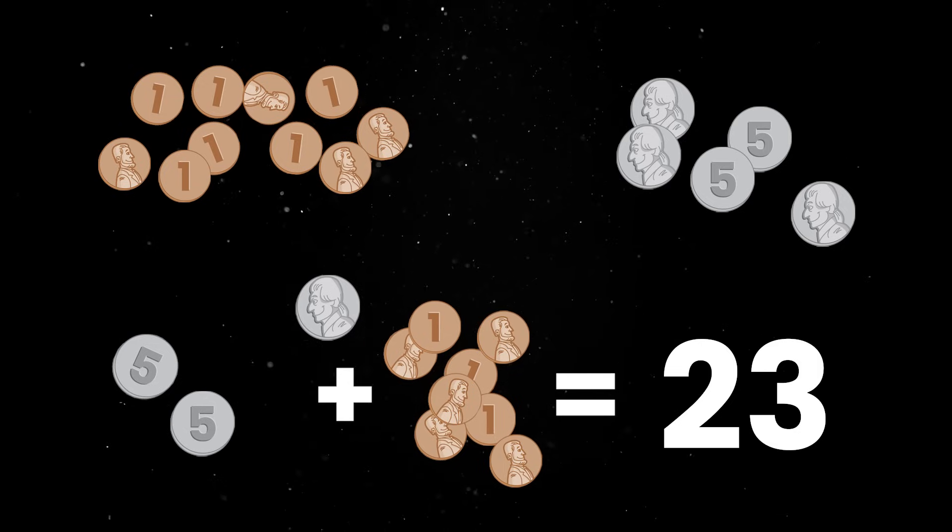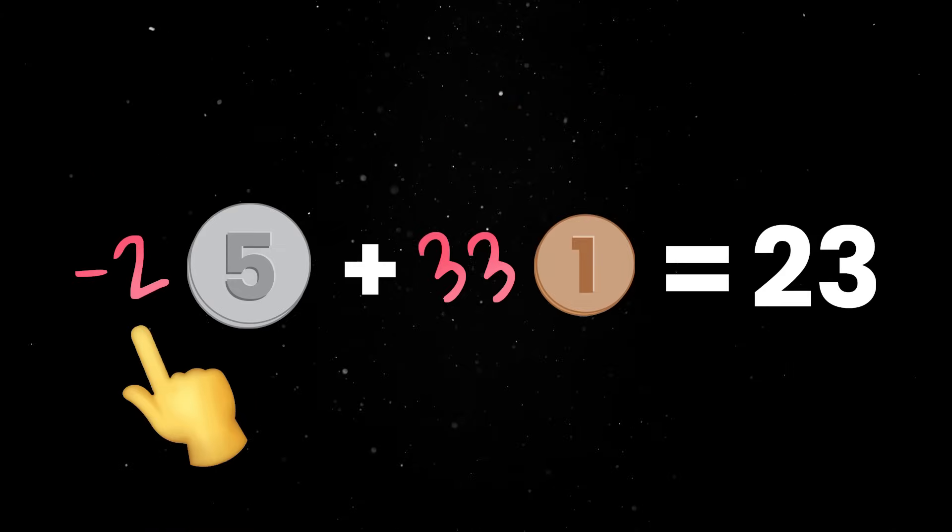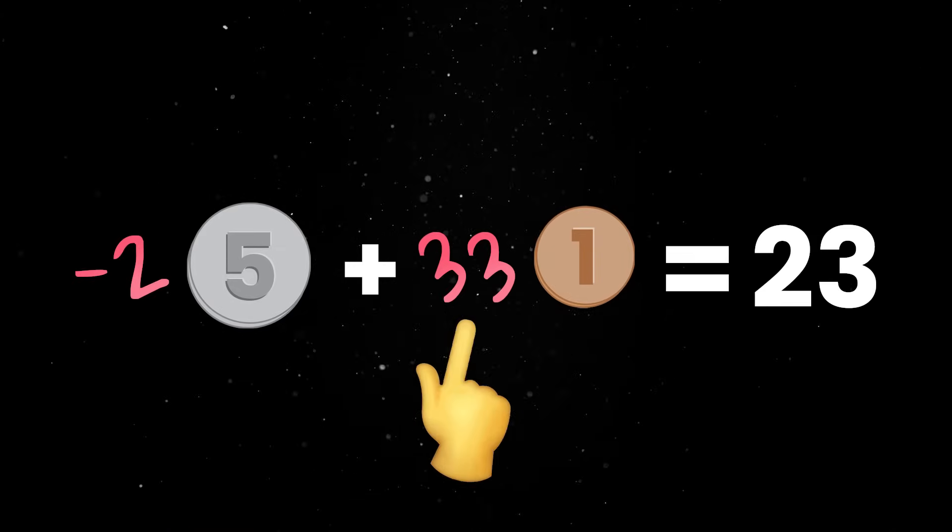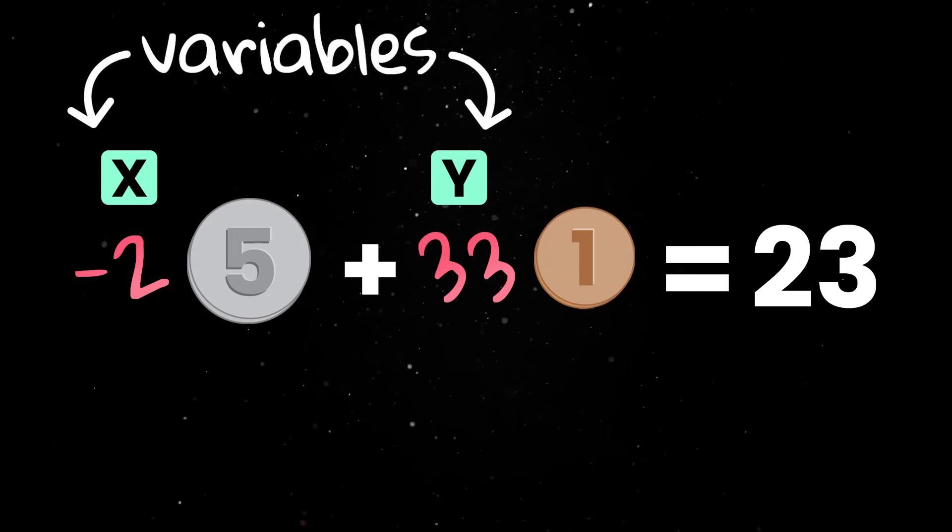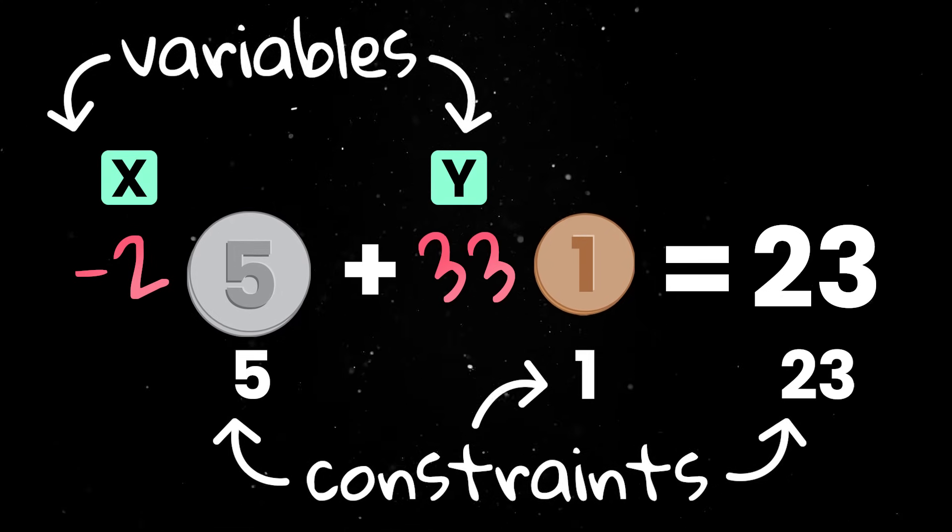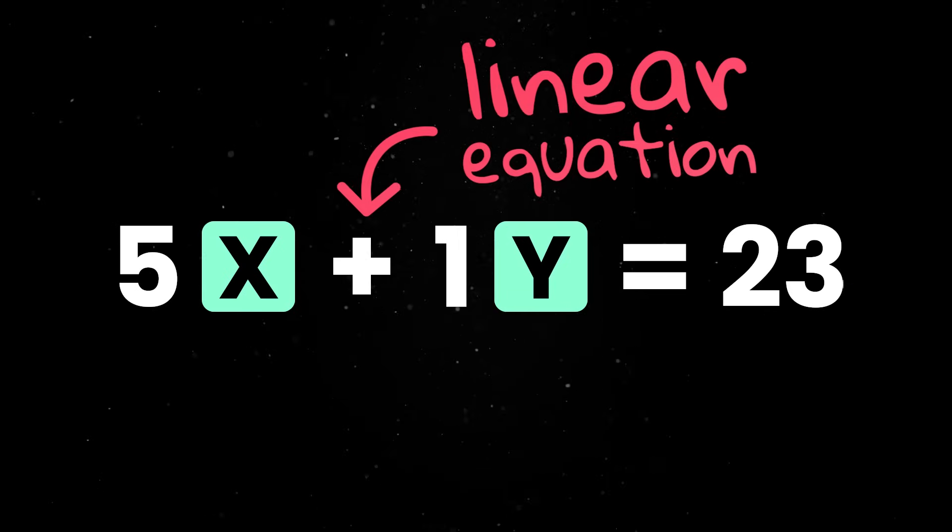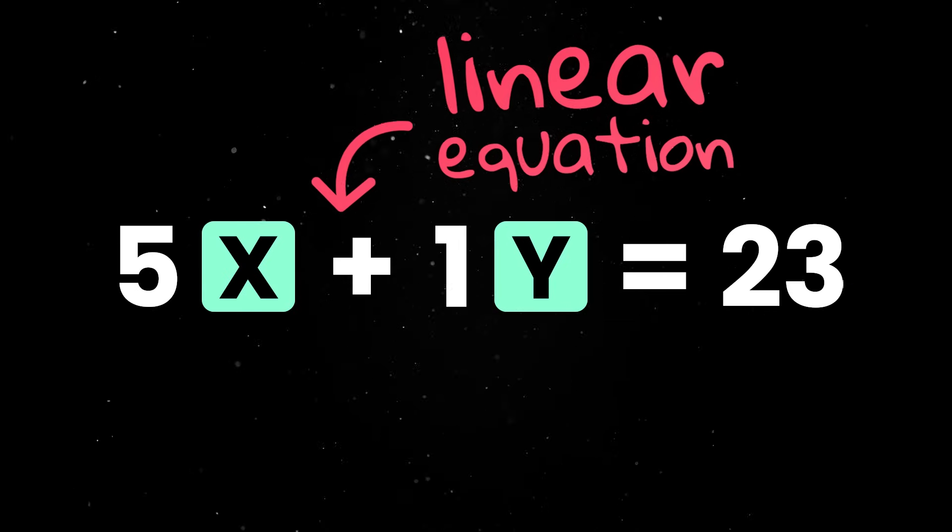Following the same path, we can convert more nickels into pennies and if we want to get fancy, we could technically have a negative number of nickels and compensate with more pennies. So we got variables, constraints, and a bunch of possible solutions that all satisfy the same rule. In mathematical terms, this is called a linear equation because when you plot it, the result is always a straight, flat line.